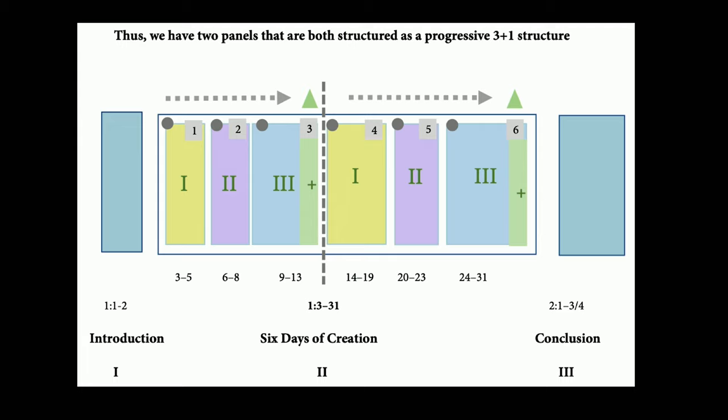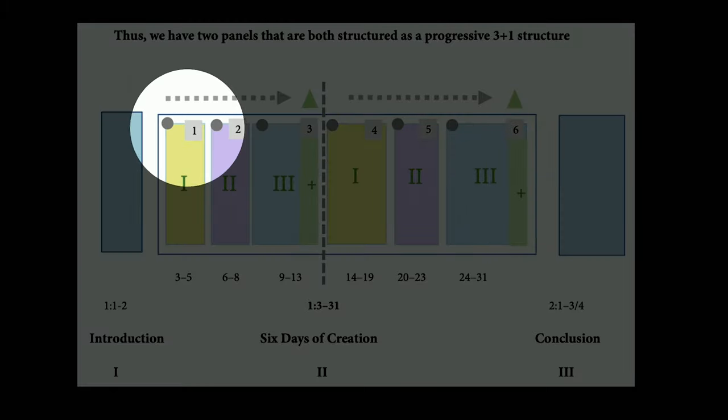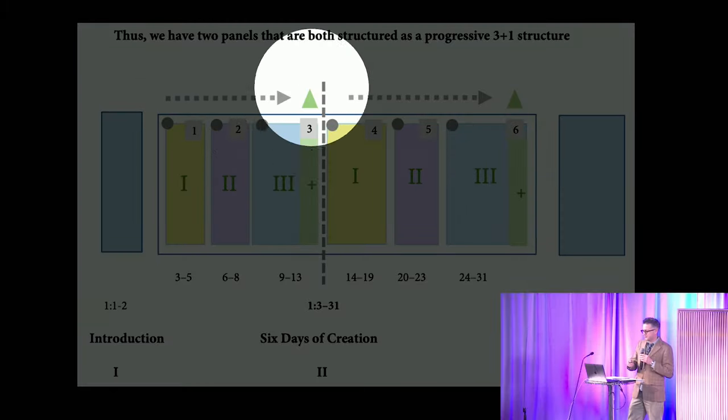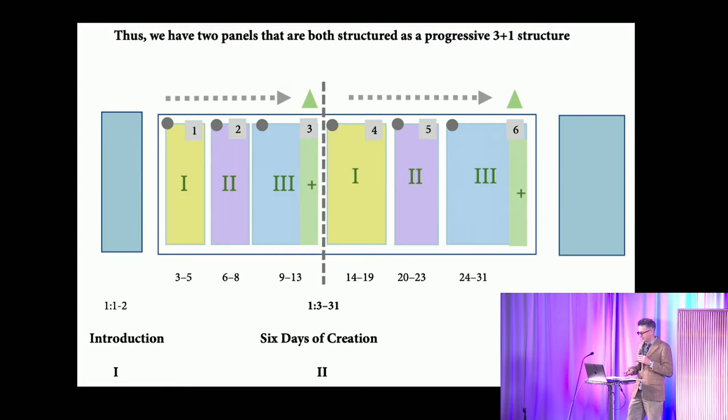Each set represents a progressive 3 plus 1 movement. In both sets of days, the third day is longer than the rest, containing an extra bonus act in both the first and the second set of days concerning plants, fruit trees, etc. So thus we have two panels that are both structured as progressive 3 plus 1 structure: 1, 2, 3 plus 1; 1, 2, 3 plus 1.